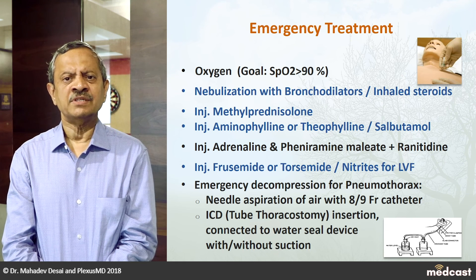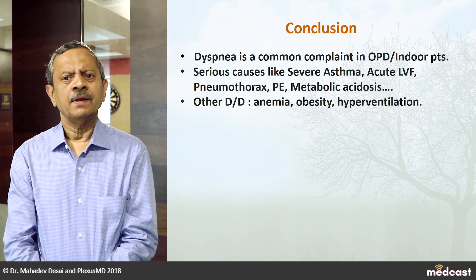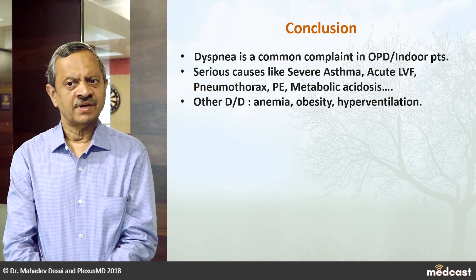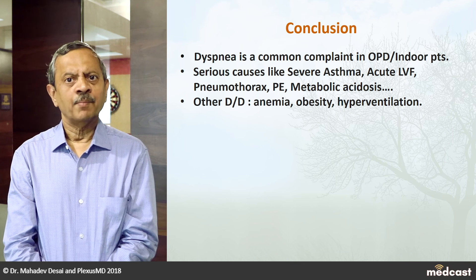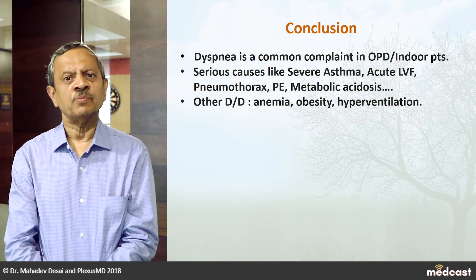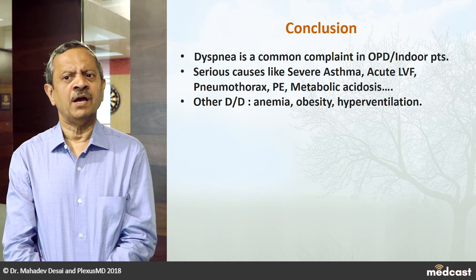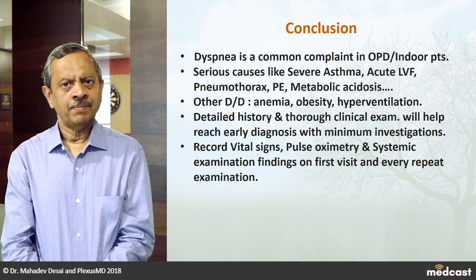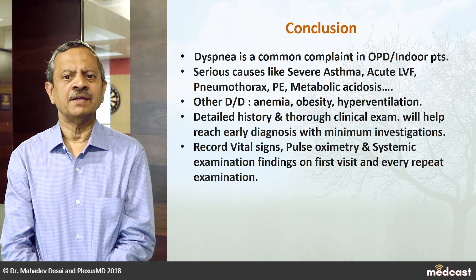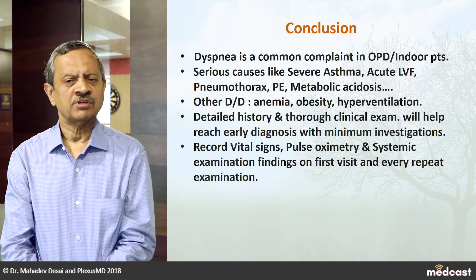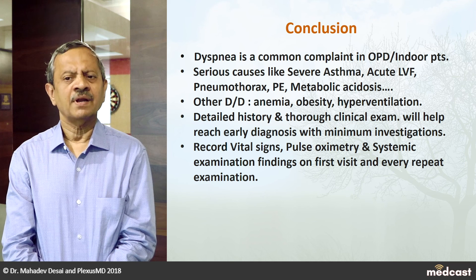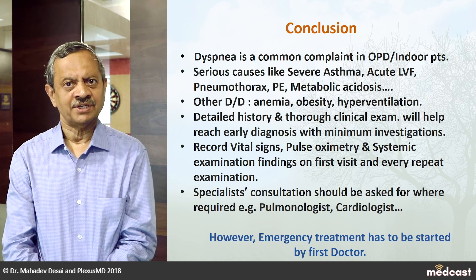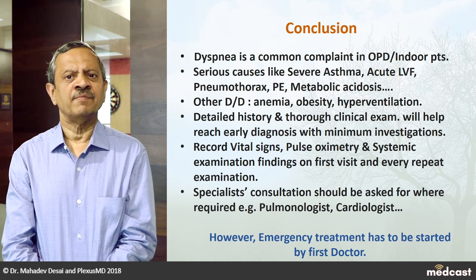All patients need to be treated based on our first-line diagnosis. To conclude — dyspnea is a common problem in OPD as well as indoor patients. Serious conditions have to be kept at the back of the mind, like severe asthma, left ventricular failure, pneumothorax, and anaphylaxis. Non-cardiorespiratory conditions like metabolic acidosis should also always be thought of. Other differential diagnoses like anemia, obesity, and hyperventilation should also be kept in mind. Detailed history and thorough clinical examination always help in reducing the number of investigations and managing efficiently. Always repeatedly record vital signs, pulse oximetry, and systemic findings — this gives us an idea about prognosis and response to treatment. Specialist consultation should always be sought when required, be it a pulmonologist or a cardiologist. But emergency treatment has to be started by the attending doctor who is with the patient.